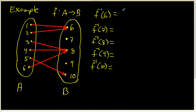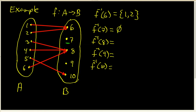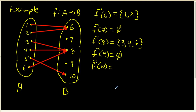The pre-image of 6: 1 and 2 both get sent to 6 by this function, so the pre-image of 6 is the set containing both 1 and 2. 7 is missed entirely by this function, so the pre-image of 7 is simply the empty set. For the pre-image of 8, 3, 4, and 6 all get sent to 8, so the pre-image of 8 is the set containing 3, 4, and 6. 9 is missed by this function, so the pre-image of 9 is empty. And the pre-image of 10 is simply the singleton set containing 5.